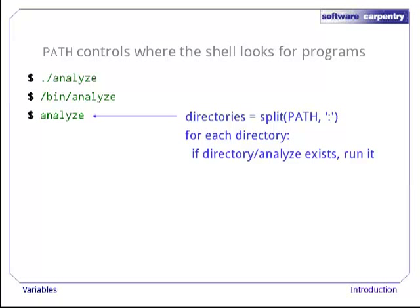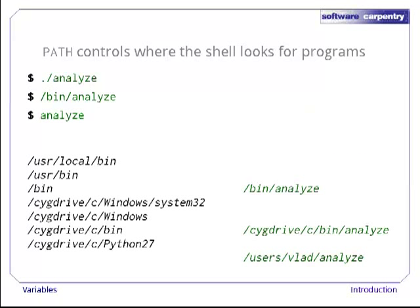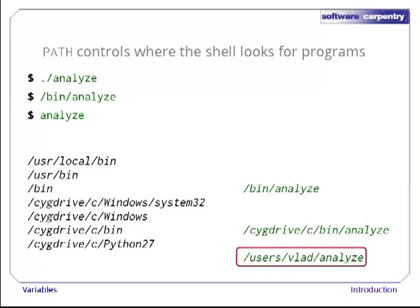To show how this works, here are the components of PATH broken out one per line. On our computer, there are actually three programs called 'analyze' in three different directories. Since the shell searches the directories in order, it finds the one in ./bin, not either of the others. Notice that it will never find the program users/vlad/analyze, since the directory users/vlad isn't in our path.